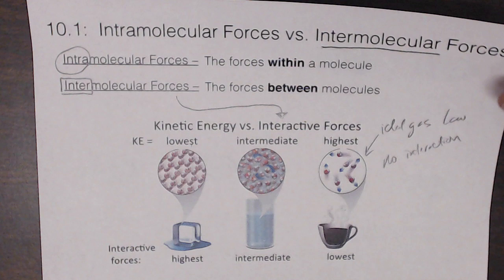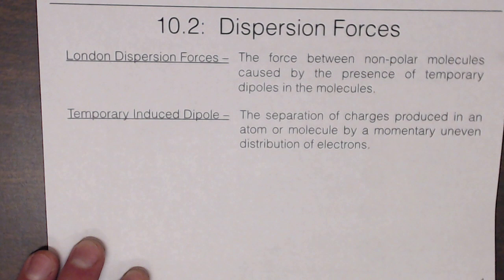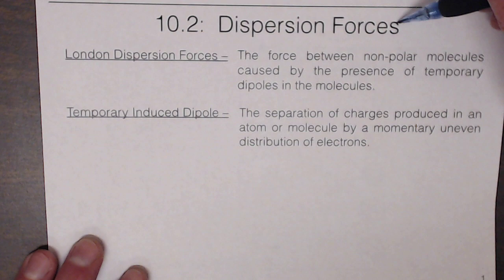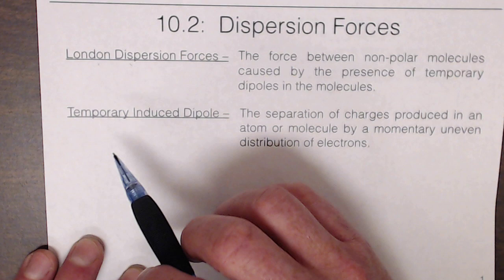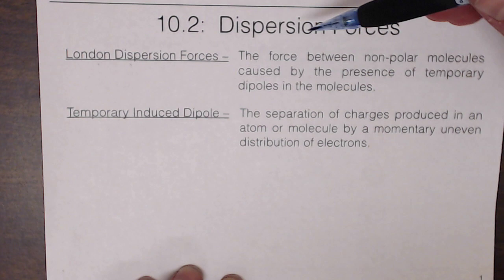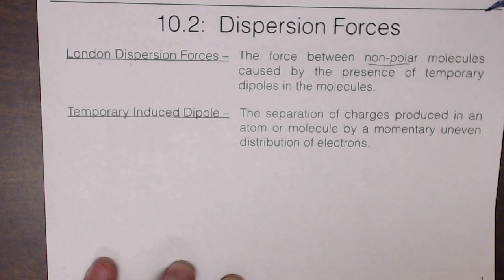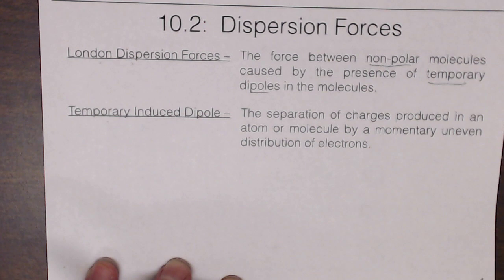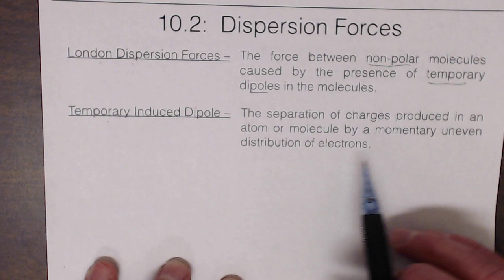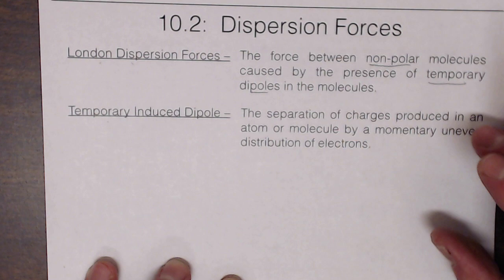Moving into section 10.2, we focus on dispersion forces — also called London dispersion forces or London forces. A London dispersion force is the force between non-polar molecules caused by the presence of temporary dipoles, sometimes called a temporary induced dipole. That is the separation of charges produced in an atom or molecule by a momentary uneven distribution of electrons.